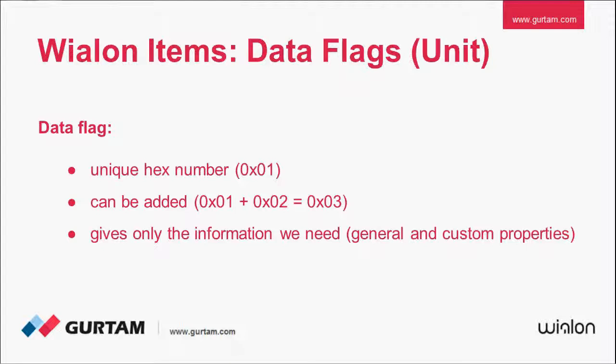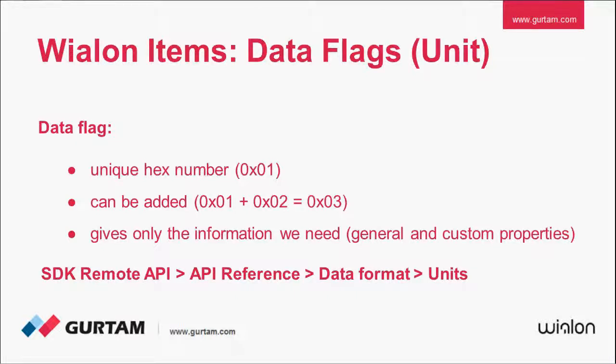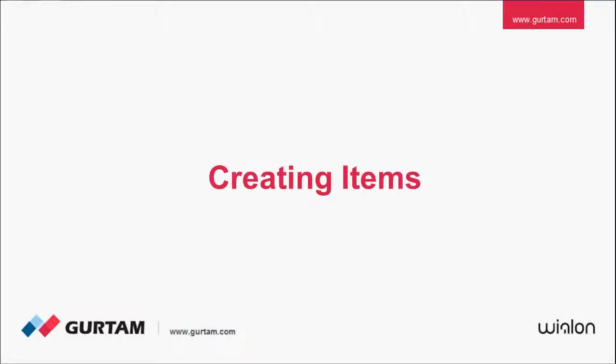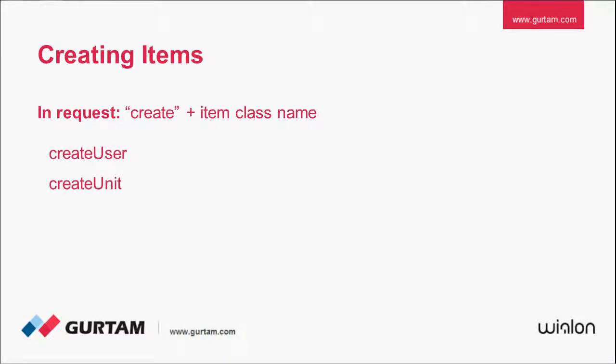Flags are used in many well-known requests and responses. You send to the server a request specifying the information you want to receive, and the server returns the data you have requested. Creating items: in the core section of Remote API, you can see that each request begins with the word create and ends with the item class name, for example, createUser, createUnit, and so on.